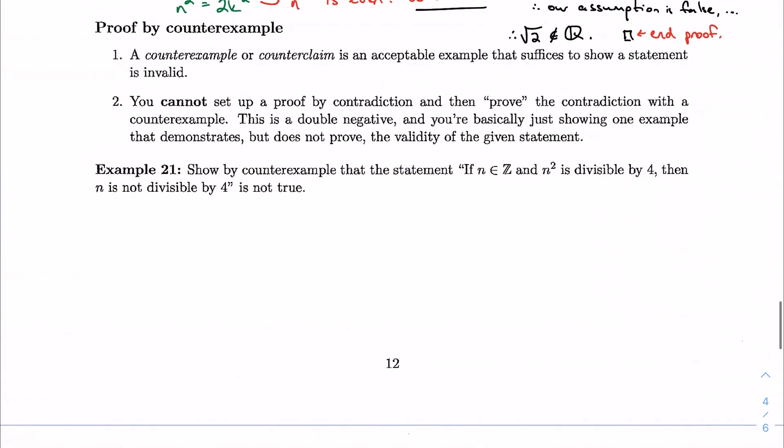All right, so last in our realm of contradiction style proofs is a proof by counterexample. So a counterexample, or sometimes a counterclaim our book will use, but I don't see that too frequently, is just some sort of suitable example that shows that something doesn't work out, shows that the statement isn't valid, which is great.